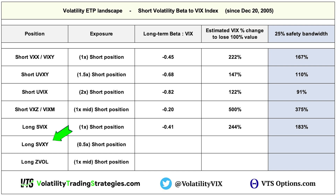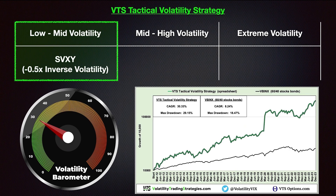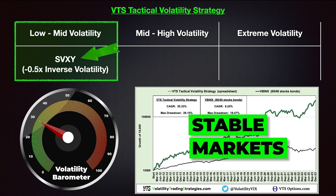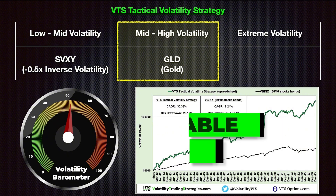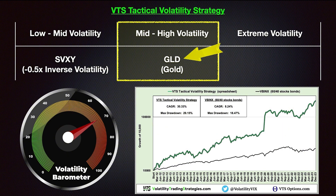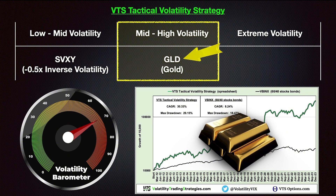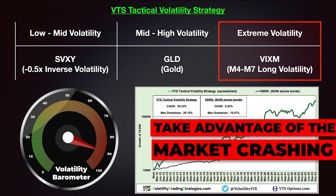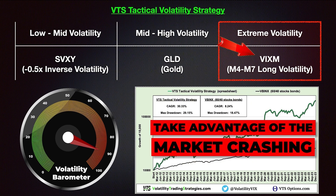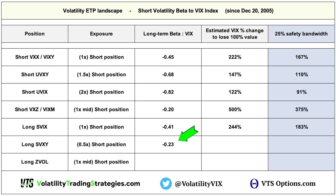SVXY is a minus 0.5 times inverse volatility ETF — the one our tactical volatility strategy uses. It's half the performance of SVIX, but also built-in half the drawdown, making it a great risk-reward ratio. Using it tactically with volatility targeting is a really good leverage factor. Beta to the VIX index here is 0.23, meaning it would require a 435% VIX spike to terminate, and 326% using our safety range.